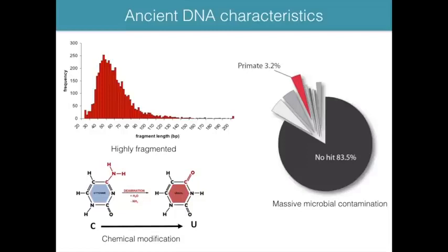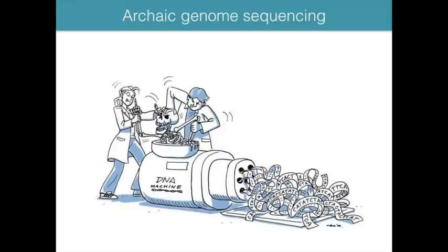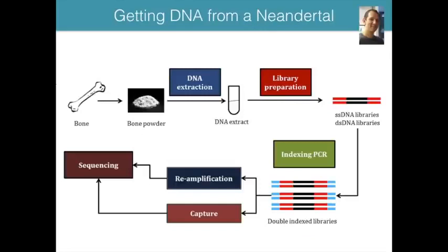It was really only around 2005, with the advent of next-generation sequencing, that it became possible to extract and directly sequence ancient molecules in sufficient quantities to reconstruct nuclear genomes. The process typically starts with removing a small amount of powder — fewer than 100 milligrams — from a bone or tooth. DNA is extracted, sequencing libraries are double-indexed, and then either shotgun-sequenced directly or put through enrichment capture to extract sites of particular interest.